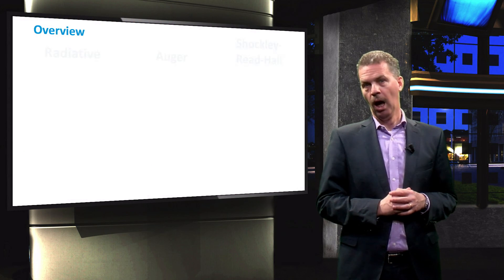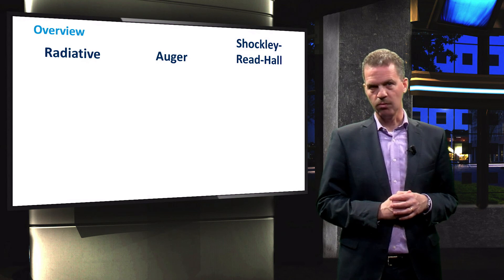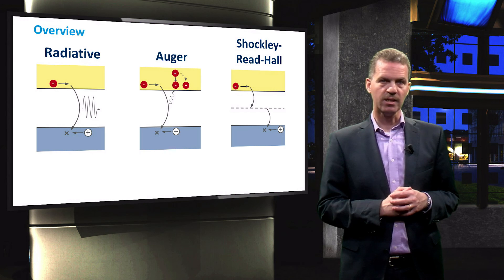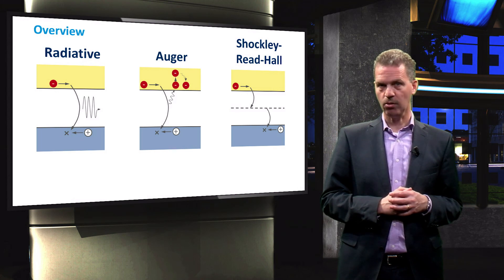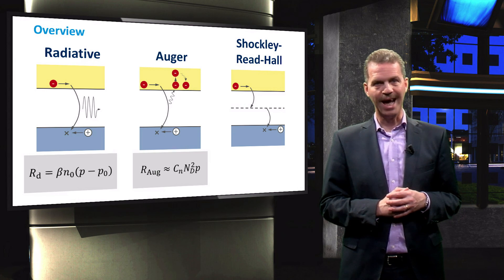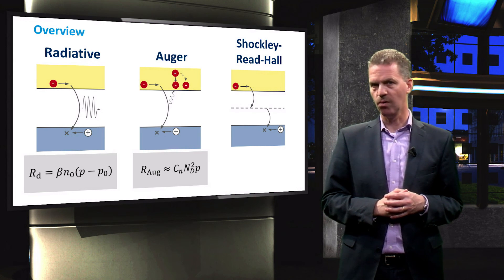In summary, we have seen that we can distinguish three recombination processes. The mechanisms underlying radiative and Auger recombination were discussed, and we now understand their recombination rates.